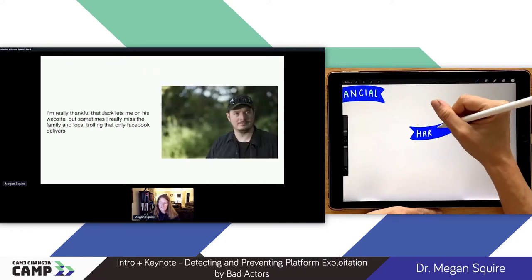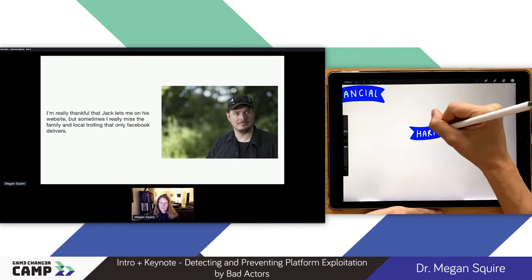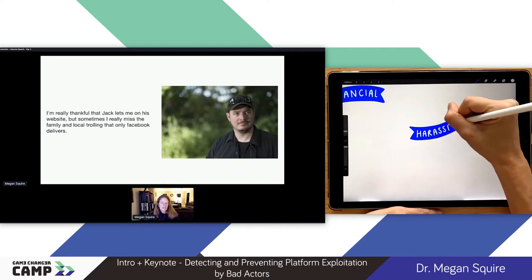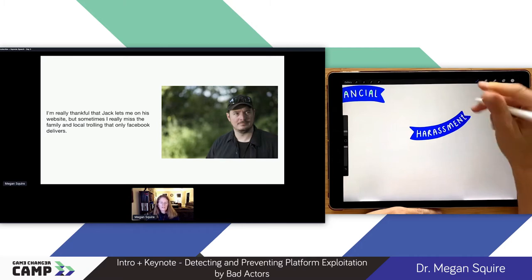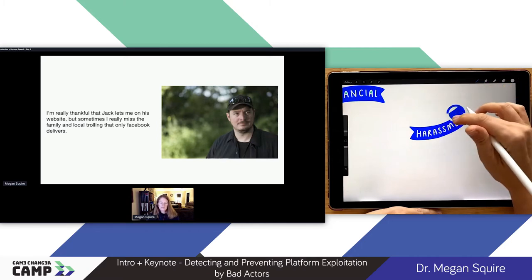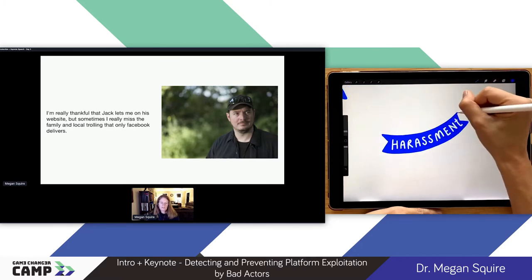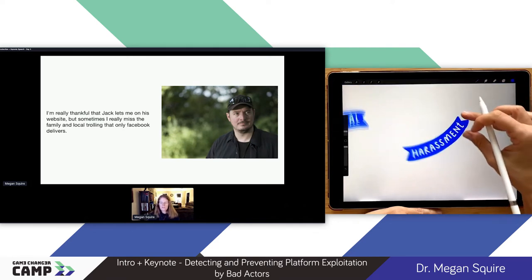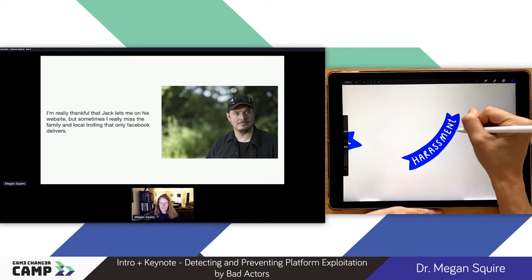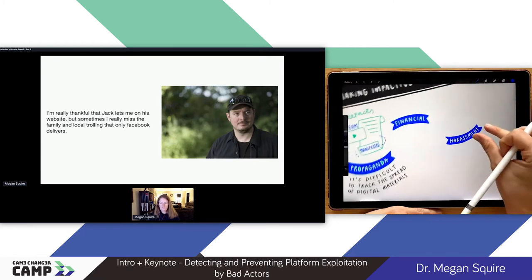This is a white nationalist from the US named Matt Parrott. He's talking on Twitter — he's still on Twitter — but he's saying he's really thankful that Jack, that's the Twitter founder, lets him on his website because sometimes he really misses family and the local trolling that only Facebook delivers. So he's been removed from Facebook but misses the opportunity to troll and harass other users on that platform.